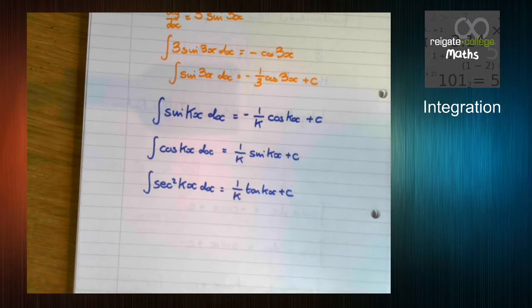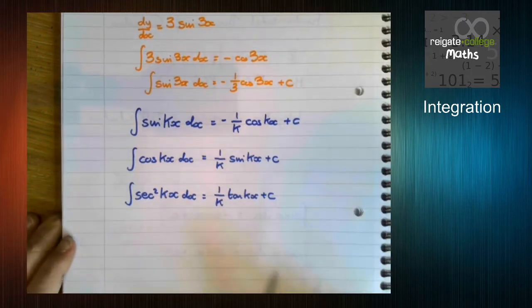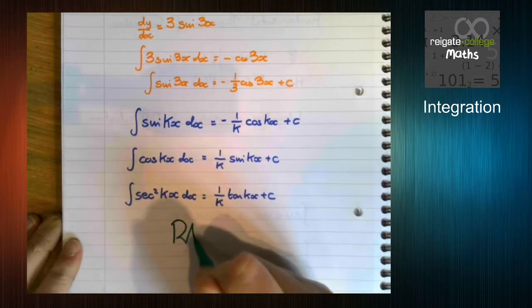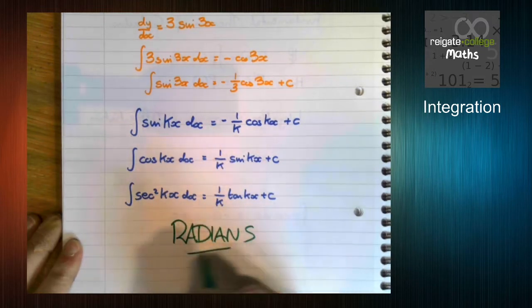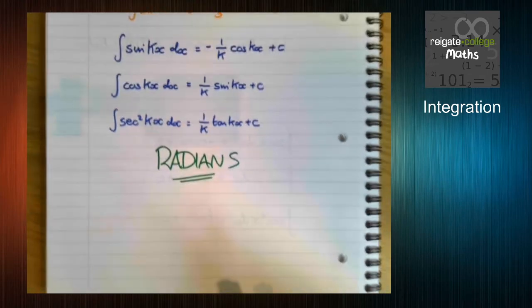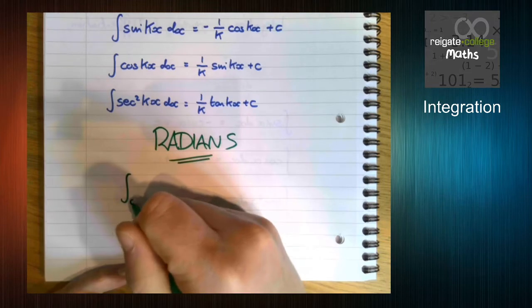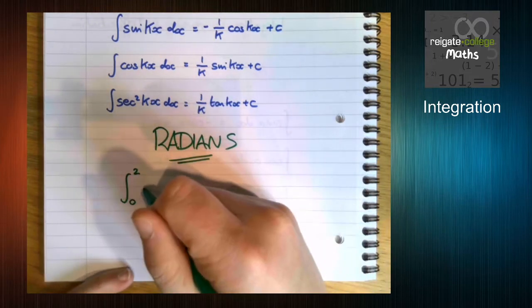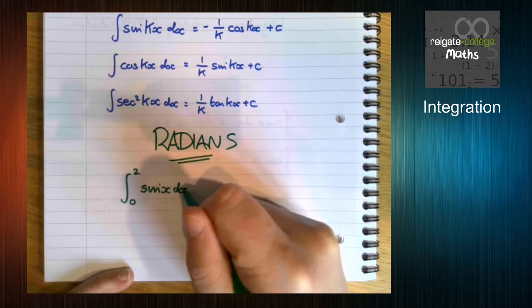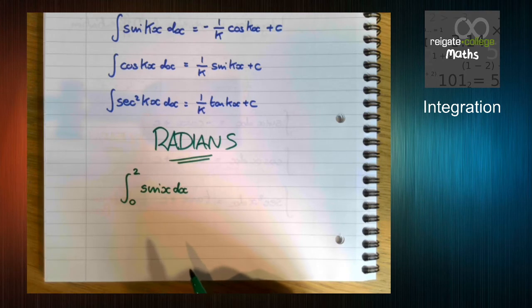Now there's one big point that we haven't made that you need to be aware of, and it's the same as when we were doing differentiation. Whenever you integrate with trig, you must be working in radians. Which means that if you're doing definite integration, something like the integral between 0 and 2 of sine x, when you're working this out, you must work in radians, otherwise it doesn't work. So that's something you need to be aware of.